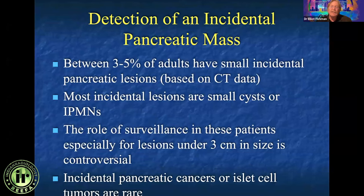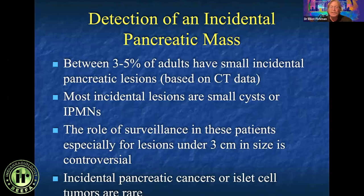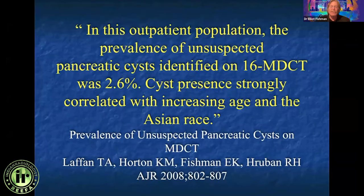When you think about incidental pancreatic lesions, the better the scanners get, the more incidental lesions you have. Right now on CT, probably over age 40, 5% of patients or more have small cystic lesions. The challenge is often on a size basis — what do you do with these? Do you need to evaluate all of them, or is there a specific size threshold? We'll go through a number of different lesions.